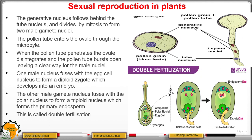In summary: one male nucleus from the division of the generative nucleus fuses with the egg cell to form a diploid zygote that develops into an embryo, and the remaining male nucleus from the division of the generative nucleus fuses with the polar nuclei to form a triploid endosperm.